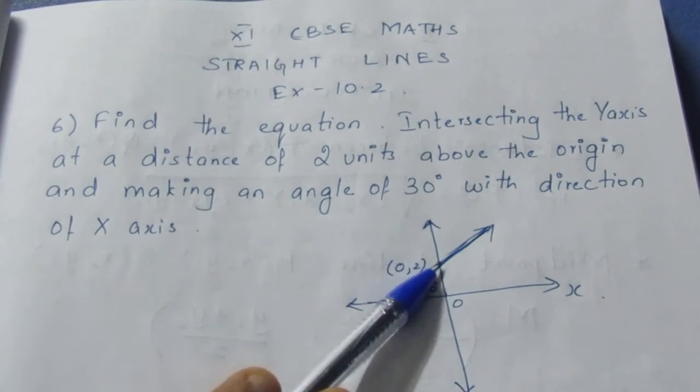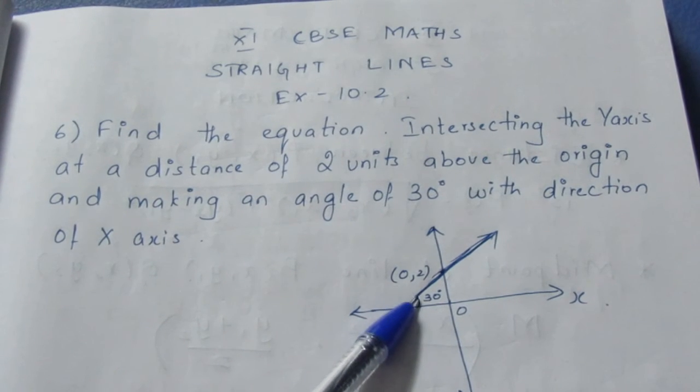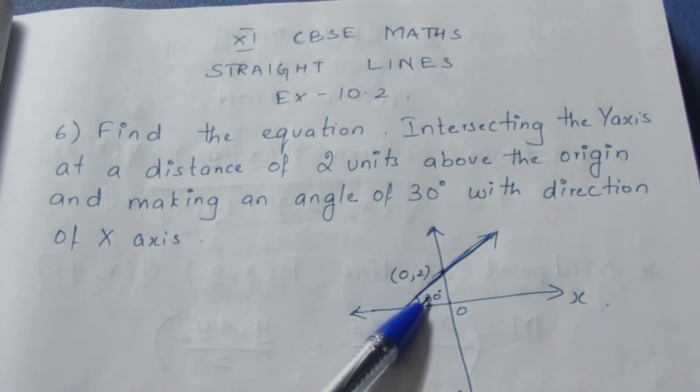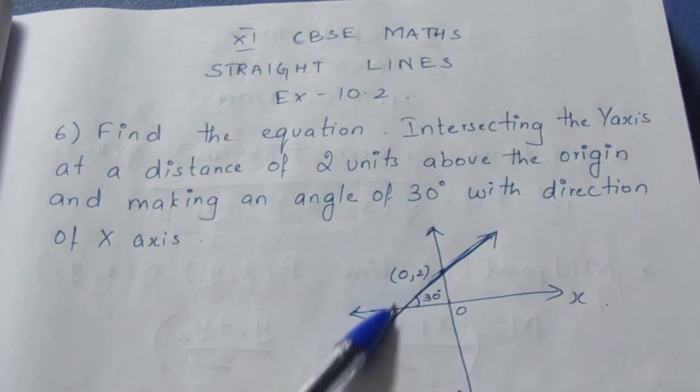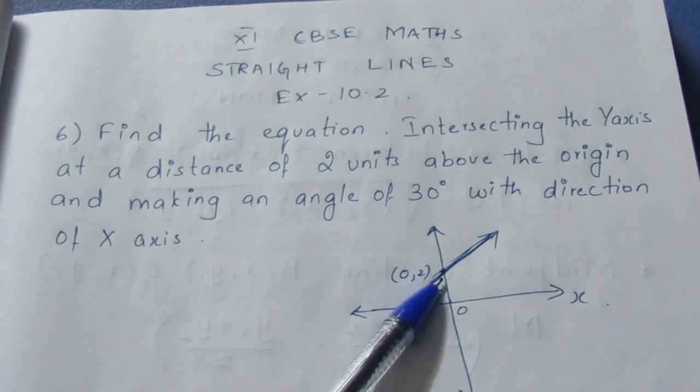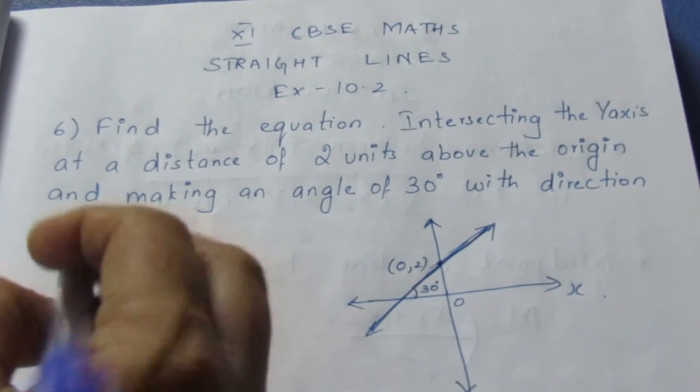In this line, we know the angle of the slope. With the angle, we can find the slope, and we know a point on the line. Now, we know a point and the angle.